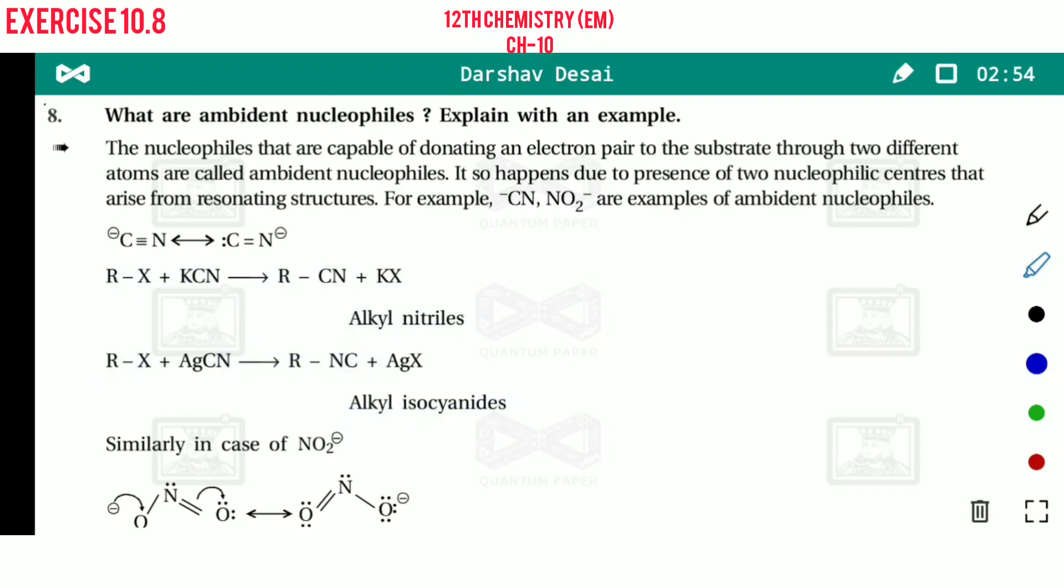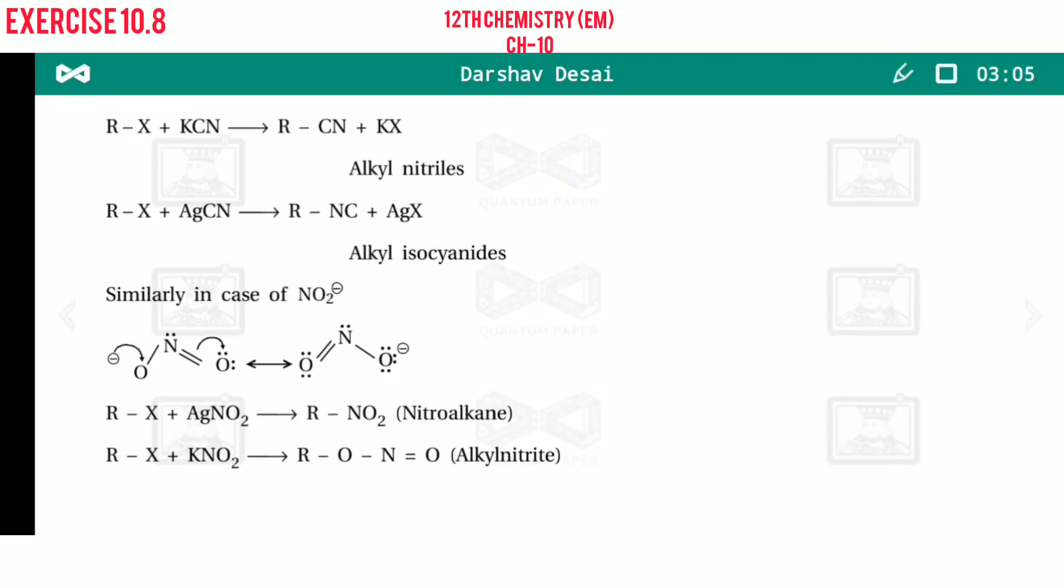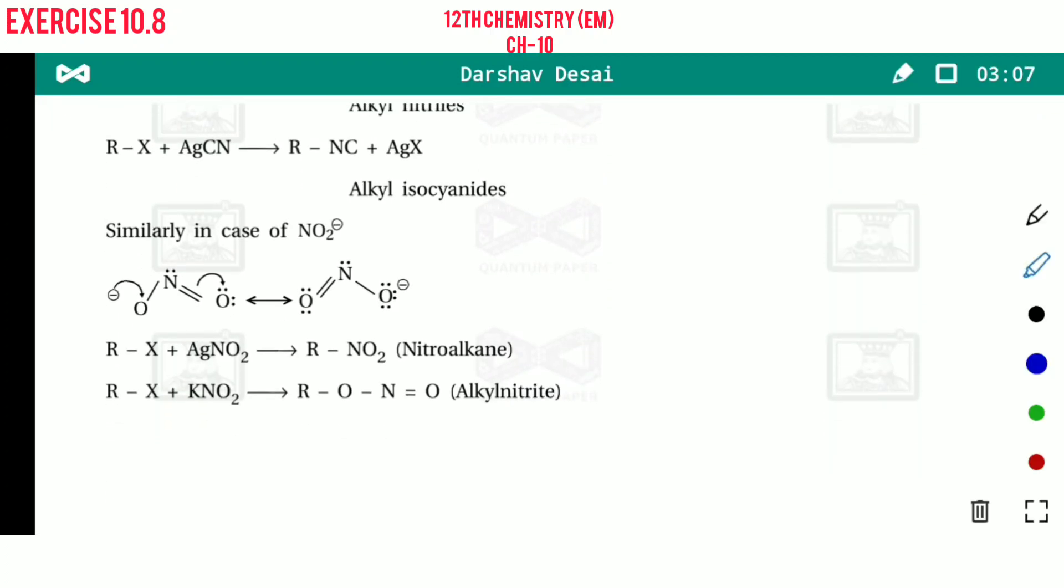Now nitrite. Second example is nitrite, not nitrate, it is nitrite. So here the resonating structure of nitrite is given, NO2.